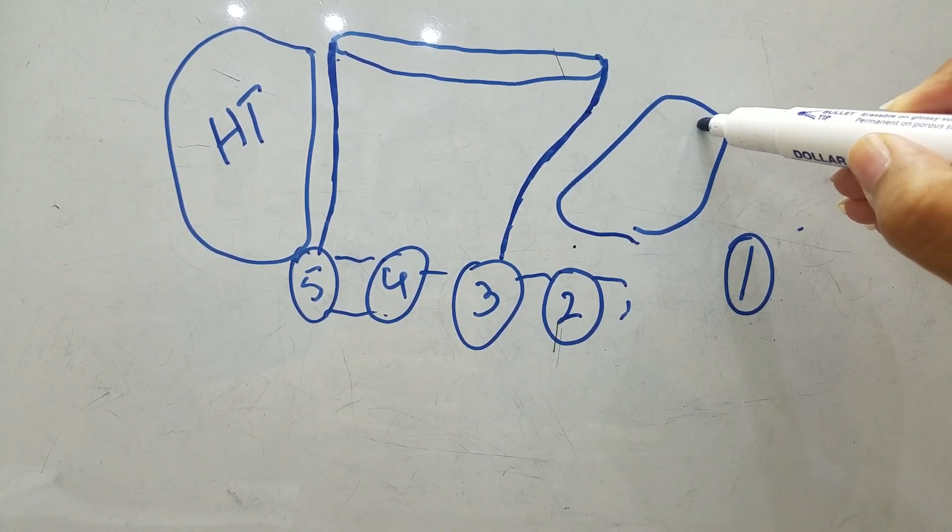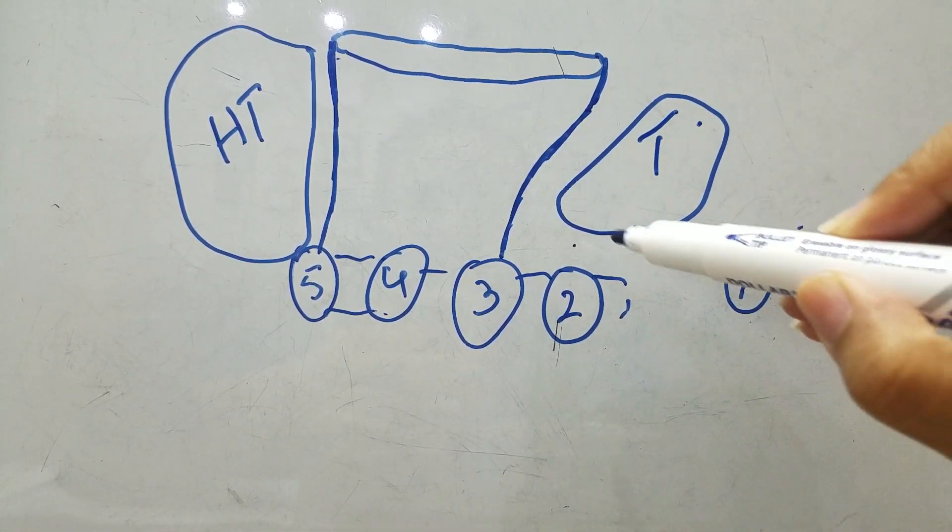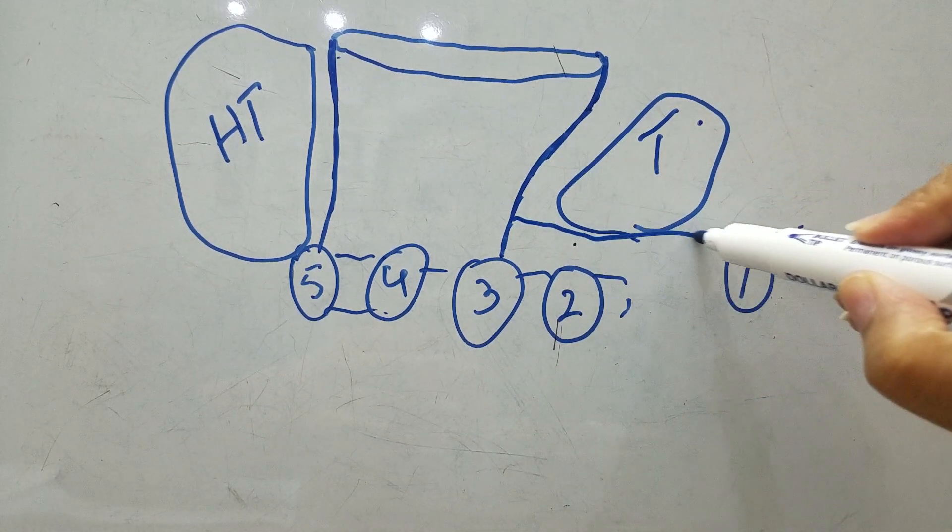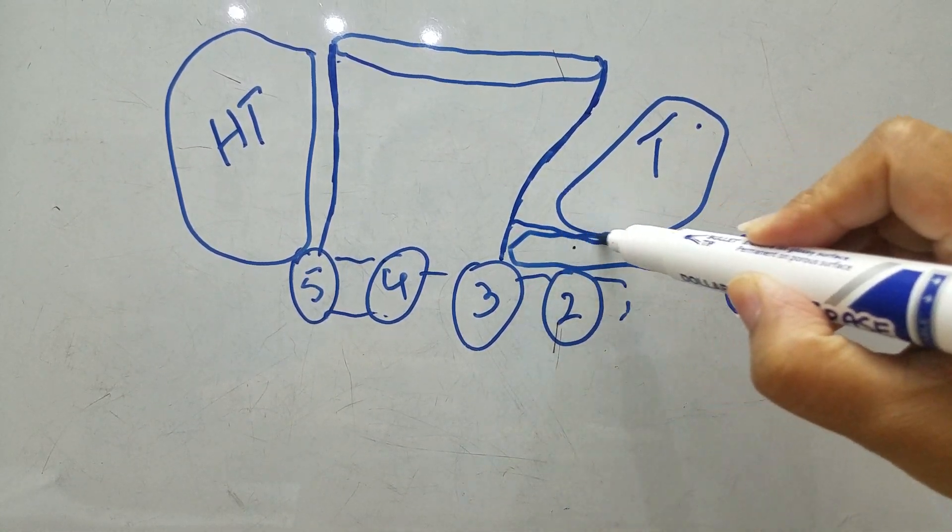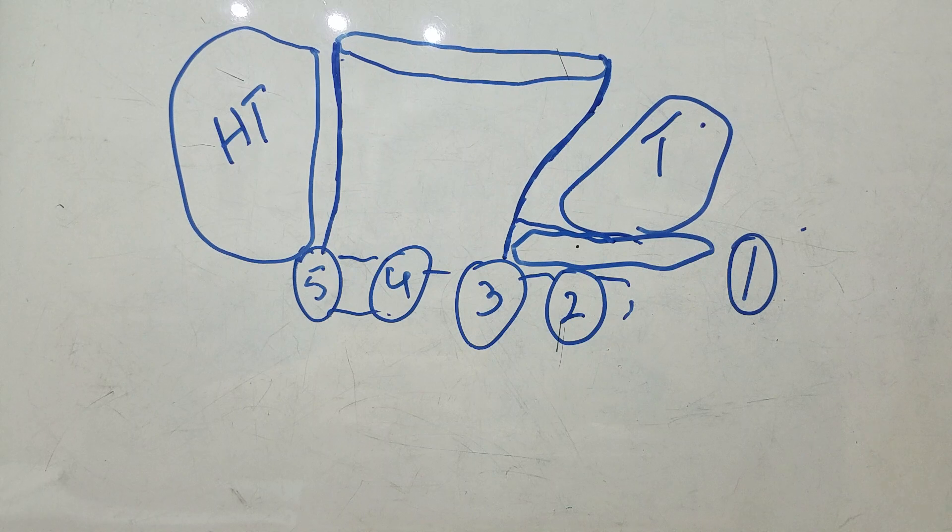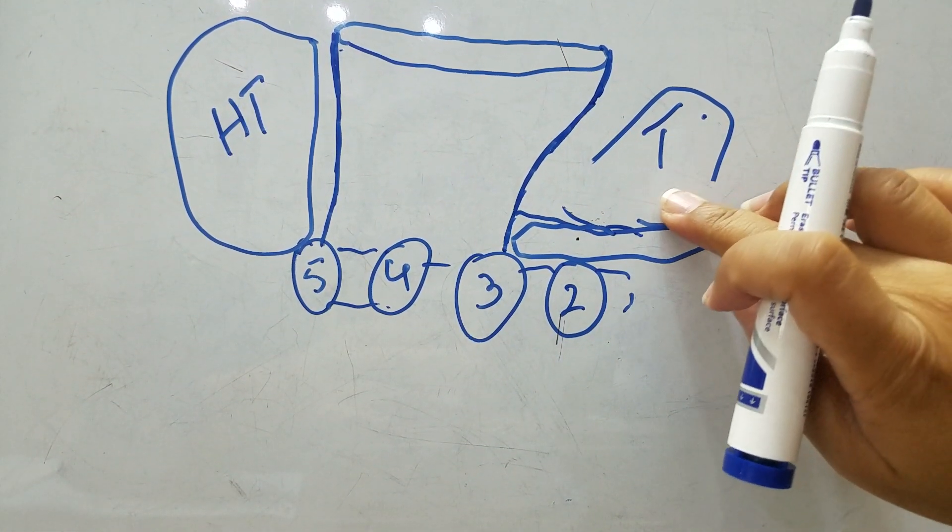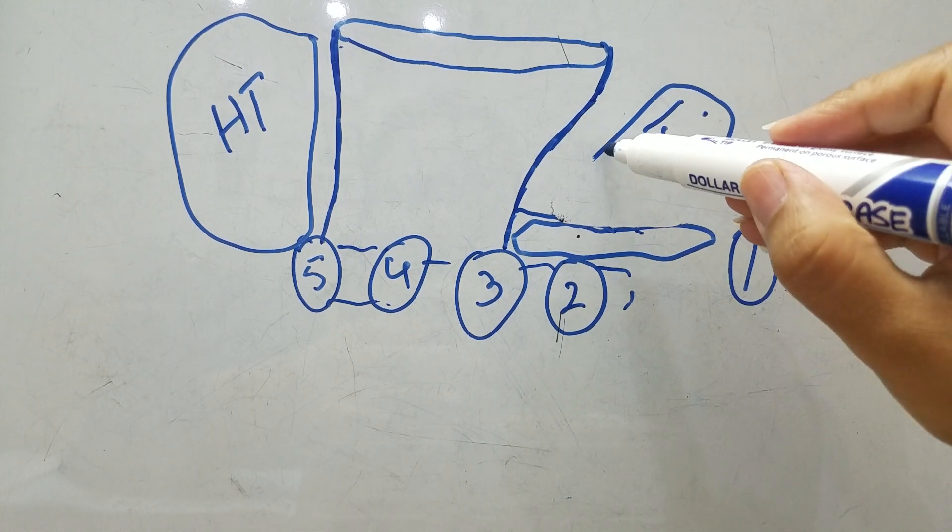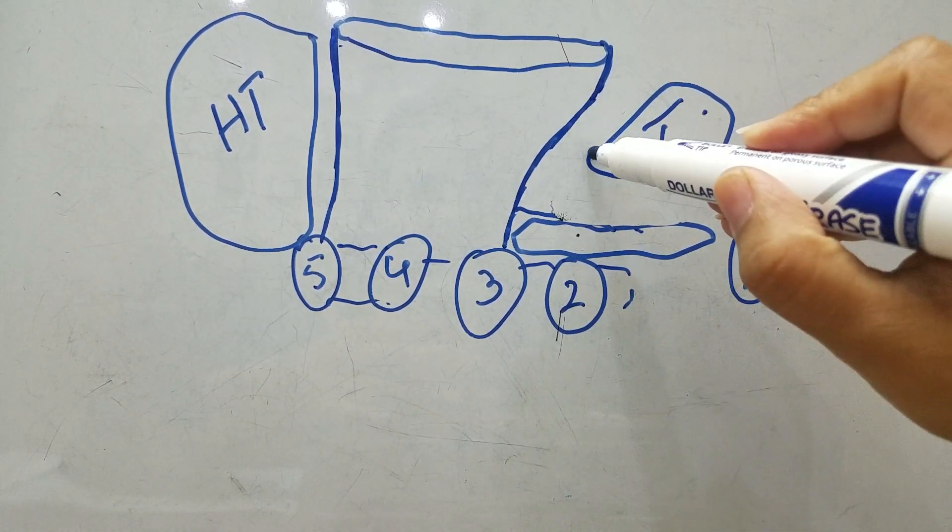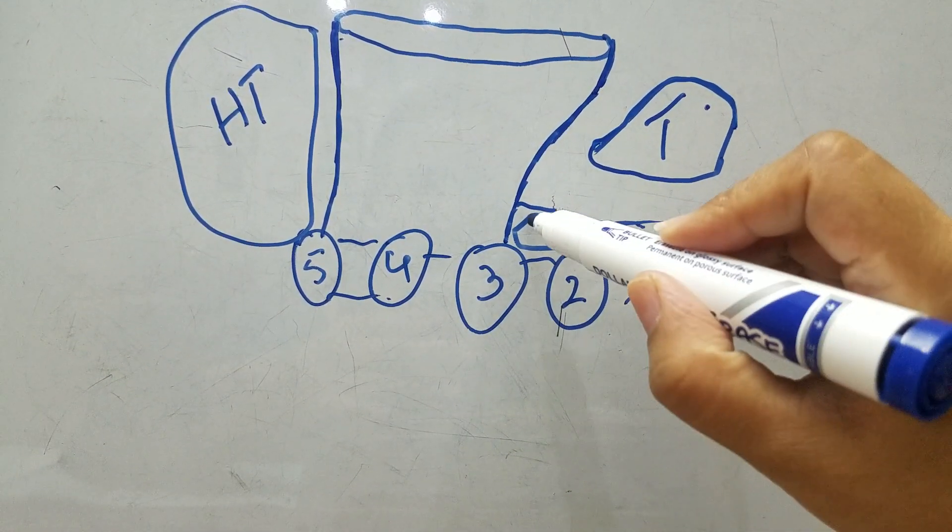Let me just redo this a little bit. So this is the thenar compartment, okay. And this here is the adductor compartment containing the adductor pollicis muscle. Here you have two spaces, so this lateral septum is dividing the two palmar spaces.